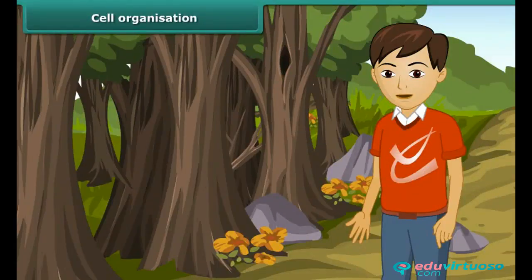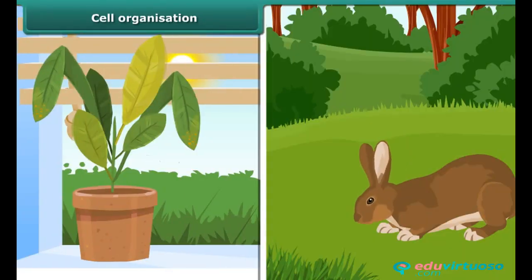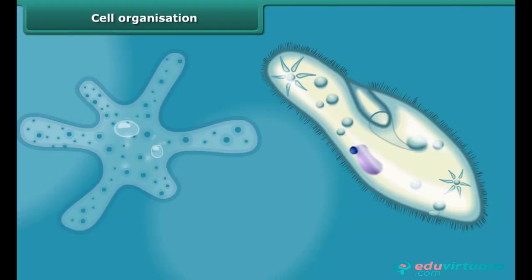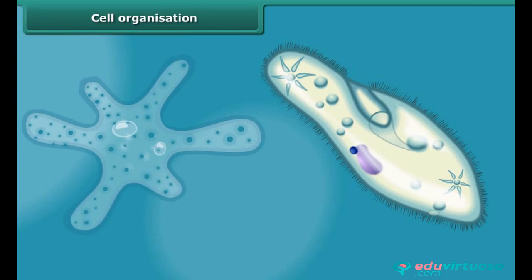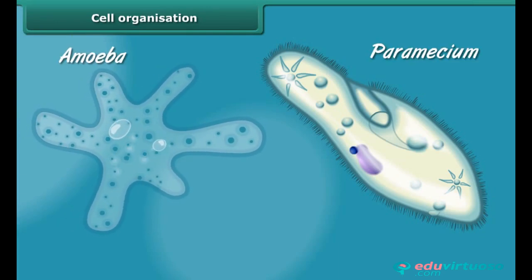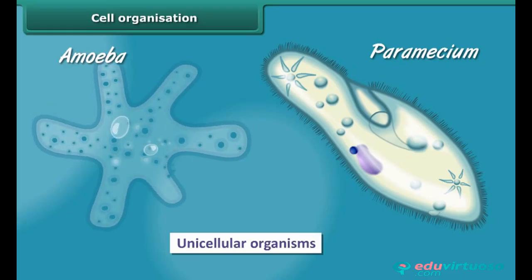Now we will study important characteristics of living organisms that differentiate them from non-living things. All living organisms, plants or animals, are comprised of cells. They may be unicellular or multicellular depending on the number of cells in their body. Small organisms like amoeba and paramecium are made up of one cell; they are called unicellular organisms.